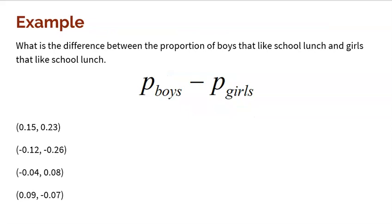Imagine we were trying to figure out the difference between the proportion of boys that like school lunch and girls that like school lunch, finding this difference as boy proportion minus girl proportion. Here are four different intervals. The first interval is all positive. All positive means — let's say these are all 95% confidence intervals — that with 95% confidence, the boy proportion is going to be anywhere from 15% more than the girls to as high as 23% more than the girls. So this interval gives a lot of confidence that the proportion of boys who like school lunch is bigger than the proportion of girls.